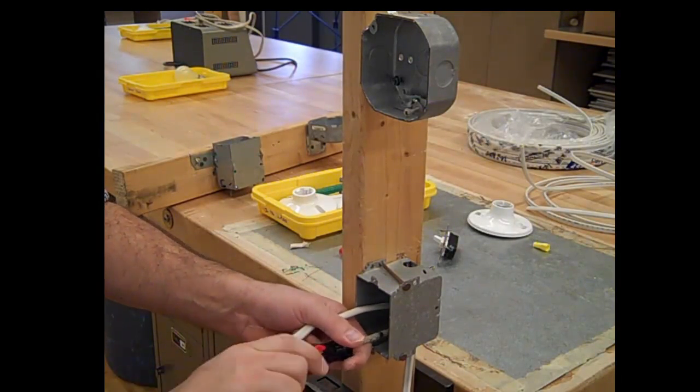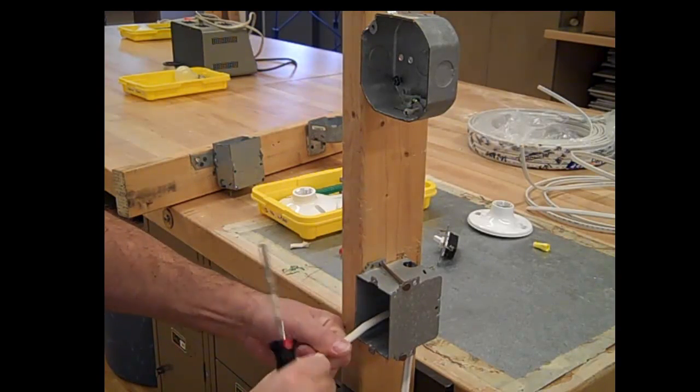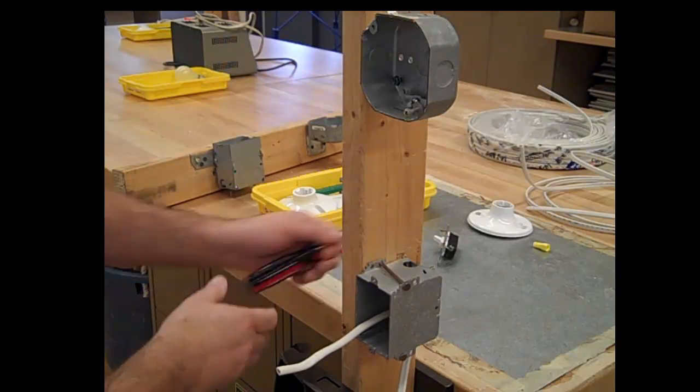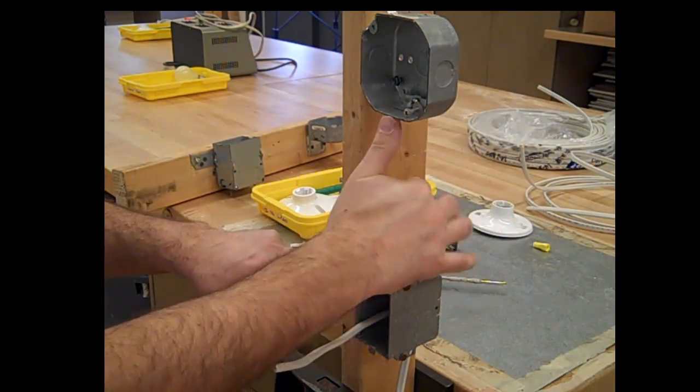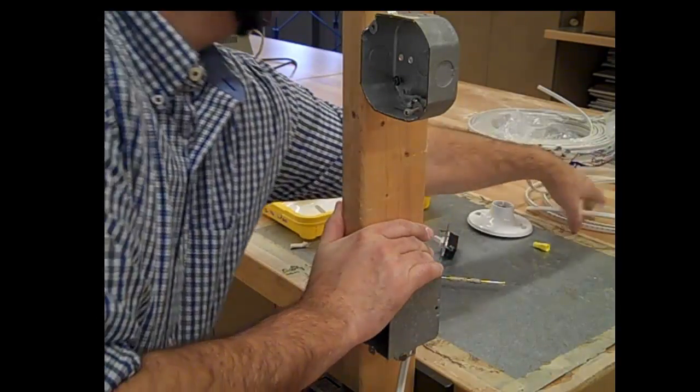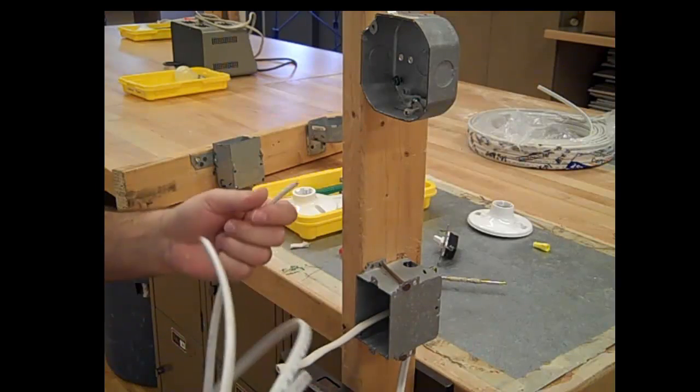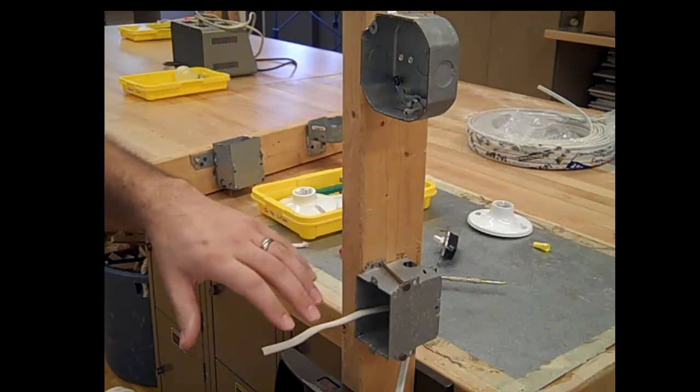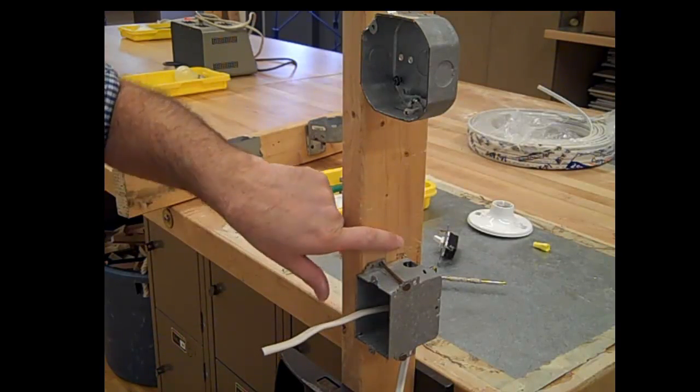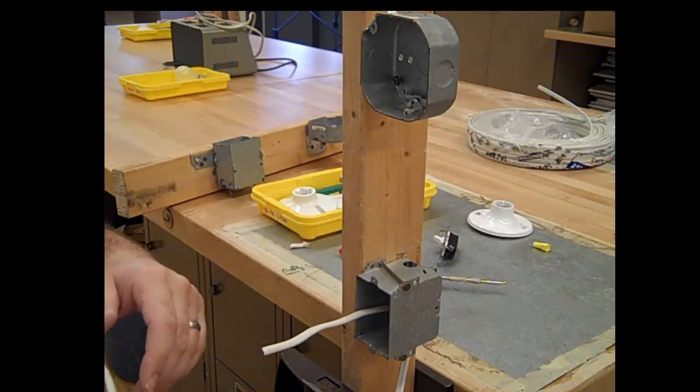The next wire we're going to run is from the top of the box to the light box. Now this wire is long, that's okay. In this activity we're doing this to show you how the connections are made. If you're doing this for real you would make this wire short and staple it to the stud. This is just a learning activity.